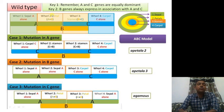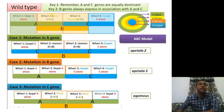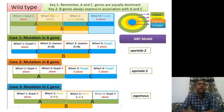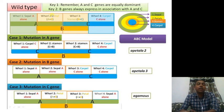In the wild type, whorl one has gene A alone, giving development of a sepal. Whorl two has A plus B — since gene B must associate with A or C — giving a petal. Whorl three has B plus C, giving a stamen. Whorl four has only C, and since C is dominant, you get a carpel. This is the wild type flower.